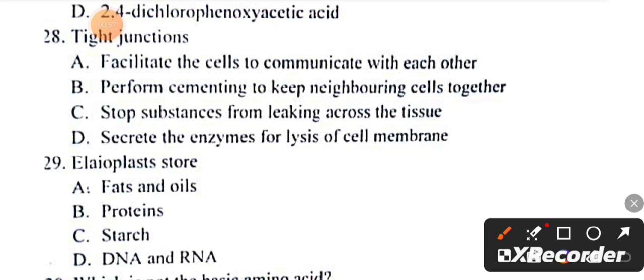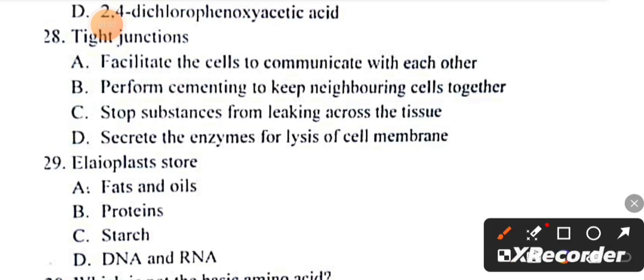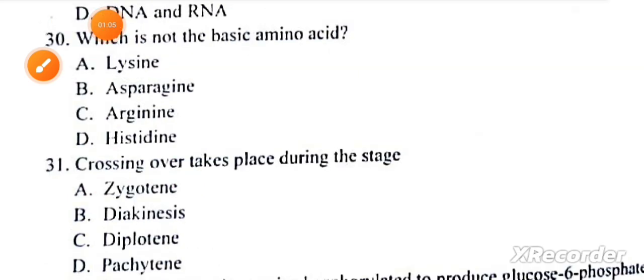Elaioplasts store fats and oils. Asparagine is not a basic amino acid. Crossing over takes place during the pachytene stage.